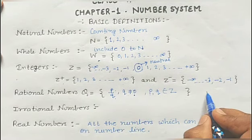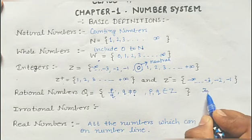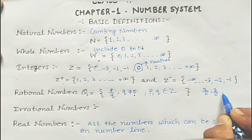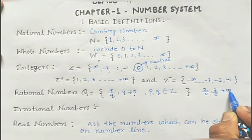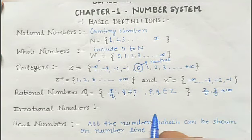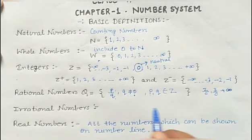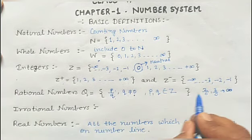In p by q, p is the numerator and q is the denominator, so the condition is that the denominator should not be equal to zero. Any number like 2 upon 0 or 3 upon 0 is indeterminate — it is undefined. Except these kinds of numbers, all numbers which can be written in the form of p by q are rational numbers.